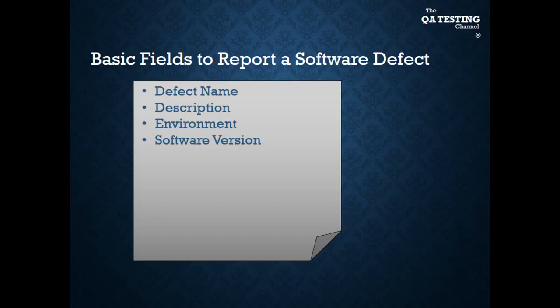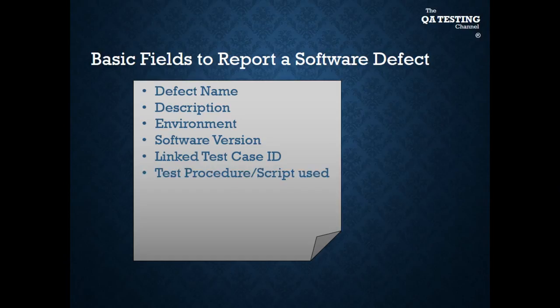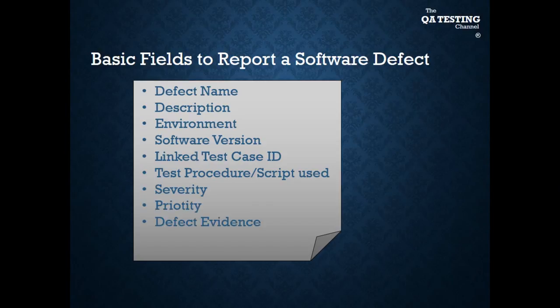Software version indicates which software we are testing. Link test ID refers to which test case ID we were using when we came across the defect. The test procedure and script user is also linked to the test case ID. All the steps are required by the software developer in order to understand how to reproduce the defect. Severity and priority of the defect are also needed. The evidence is the most important thing here, because the software developer will often say it is working on their side — so we have to evidence the defect on our side with a video, photo, or screenshots.